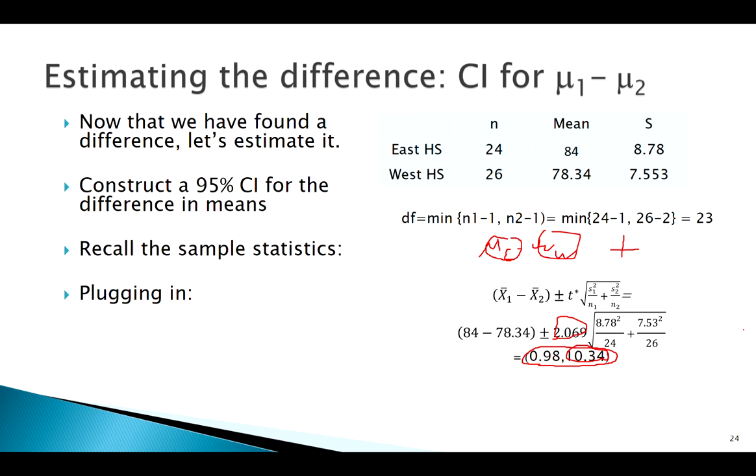So by estimating this difference like this, we know there is a difference, and it's probably that east high school is doing a little bit better than west high school. How do we interpret it? Again, 95% confident the interval we created captured the parameter we were looking for.